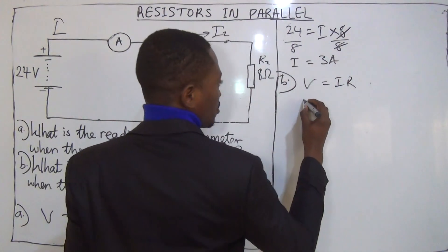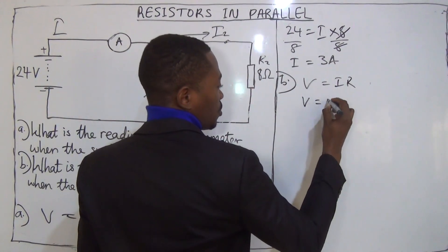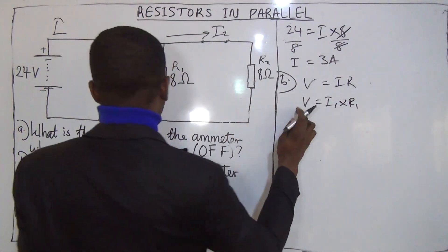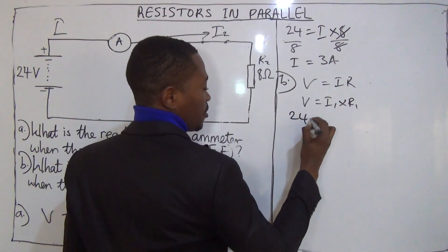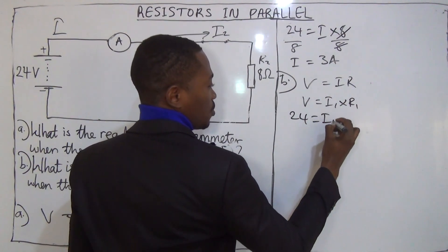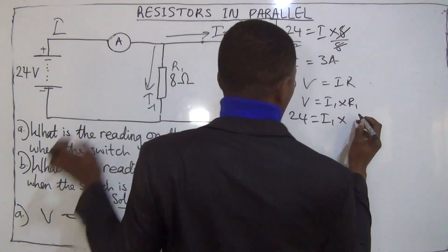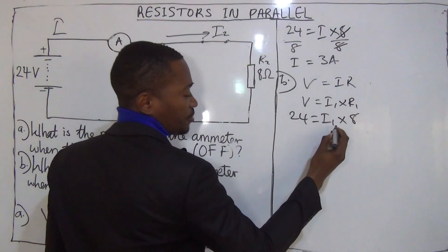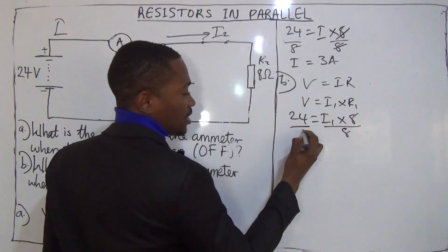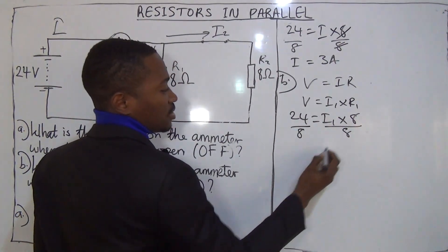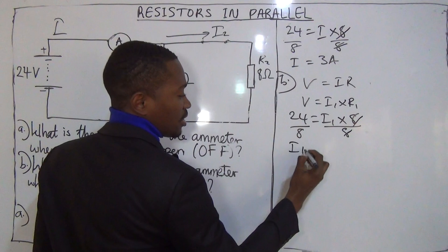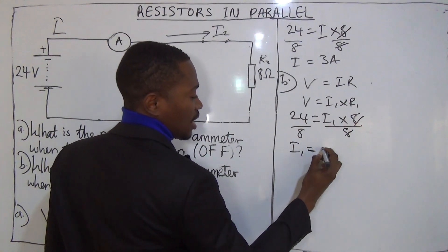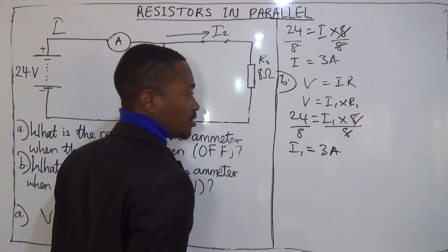Let us find I1. V equals I1 multiplied by R1 — that is Ohm's law. V is 24 volts, and R1 is 8 ohms. To find I1, we divide both sides by 8. I1 equals 24 divided by 8, which gives us 3 amperes.